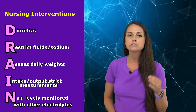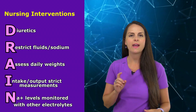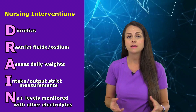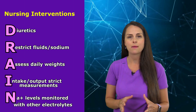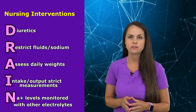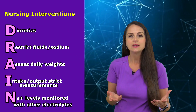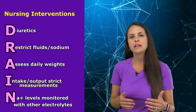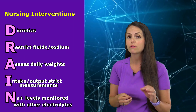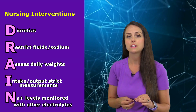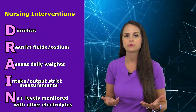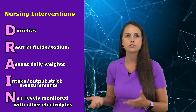I is for intake and output — strict measurements. You want to know everything the patient is taking in, not only orally but through IV flushes and anything else administered, as well as exactly what they're putting out. This is very important because you're giving diuretics and need to make sure they're producing enough urine; if they're not, you may be over-diuresing them and they could be developing kidney problems.